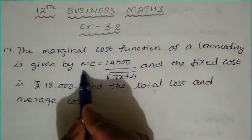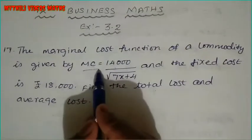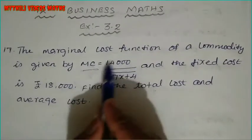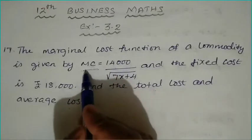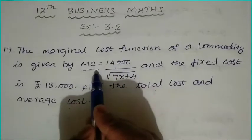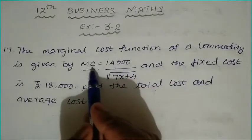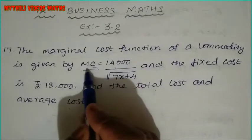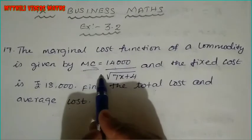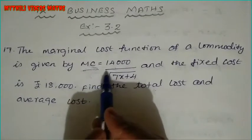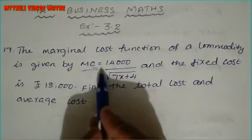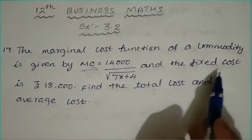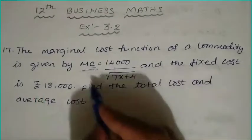The given value is the marginal cost. From the marginal cost, we need to find the cost. Whenever marginal cost is given, we integrate it to get the cost. So from the marginal cost, we integrate to find the total cost.